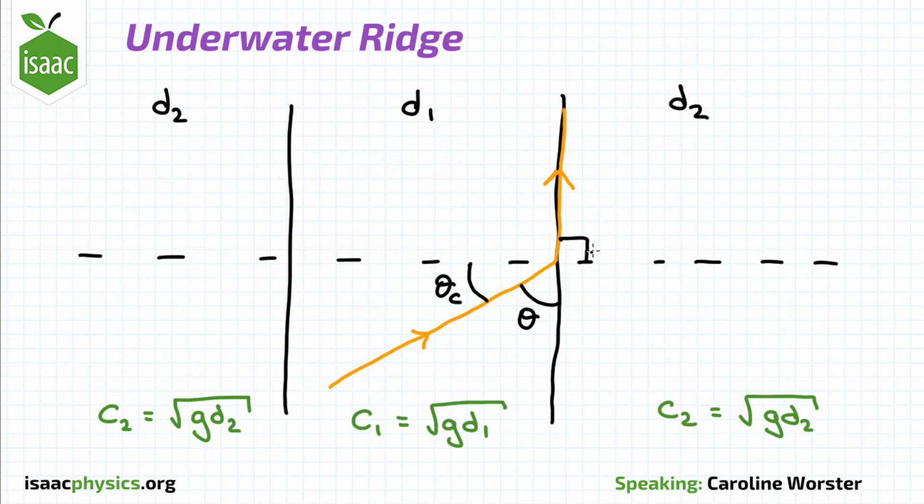In other words, the sine of the angle of refraction is 1. Using Snell's law, we can find the critical angle theta c and from that the minimum angle theta.